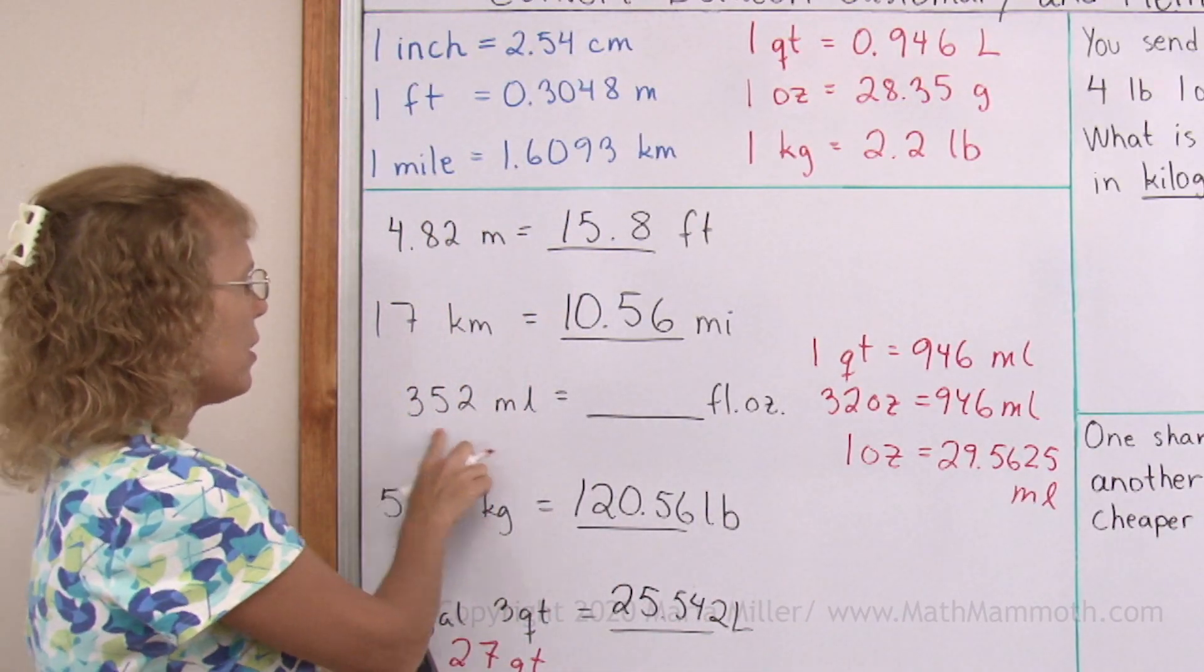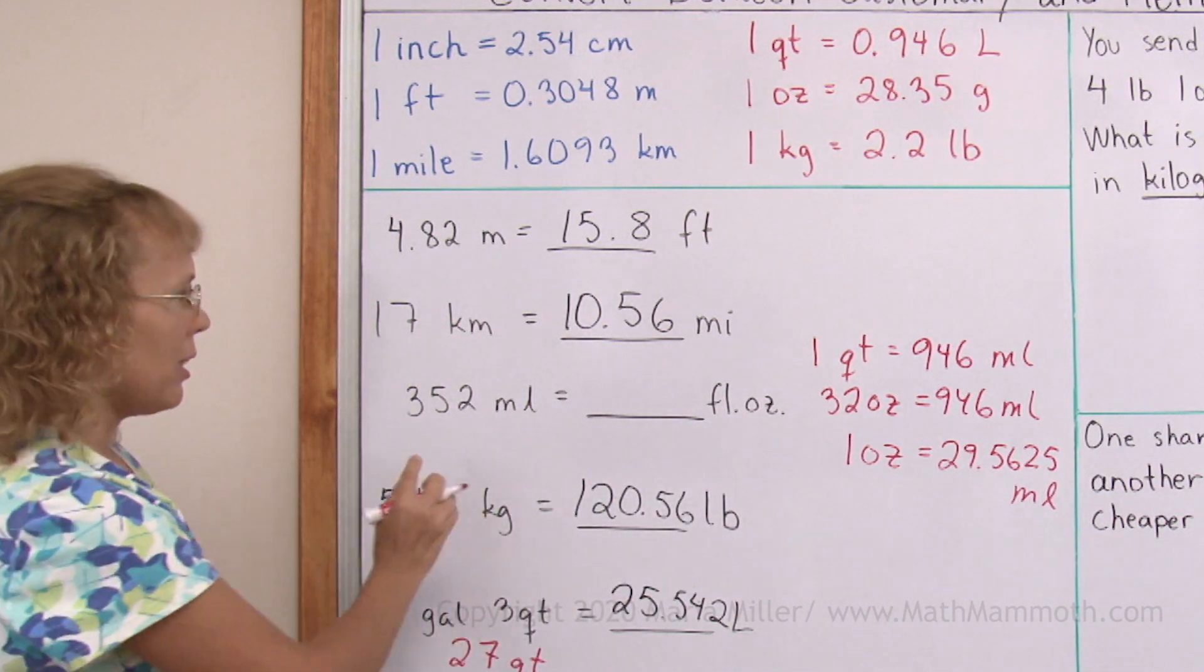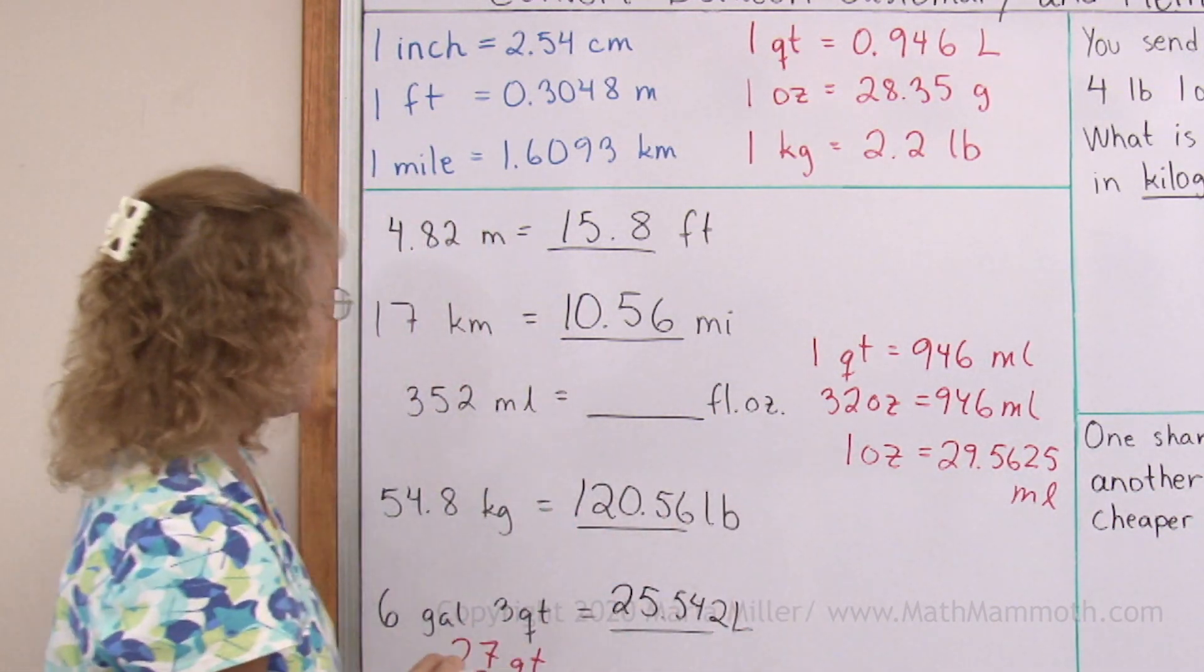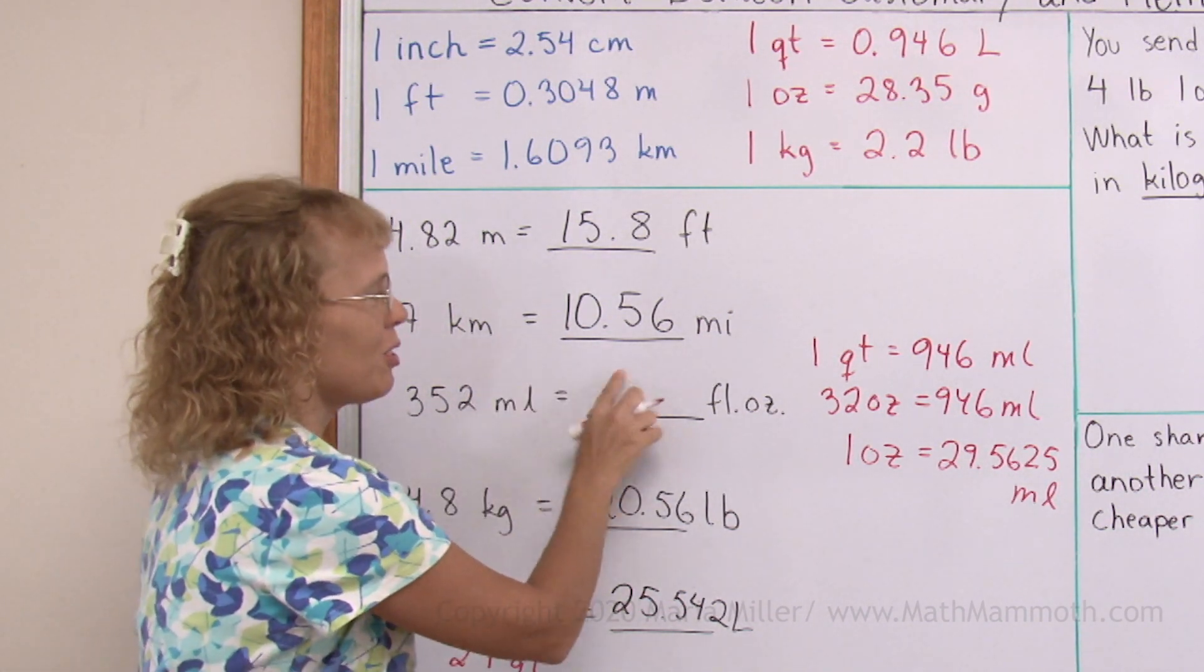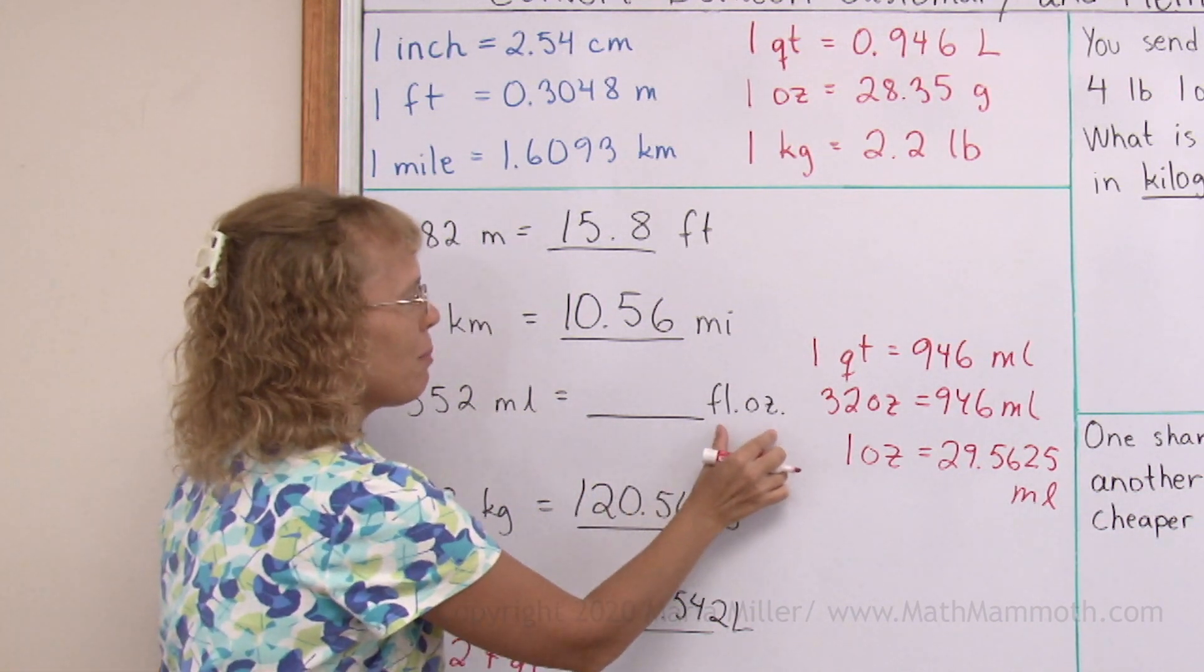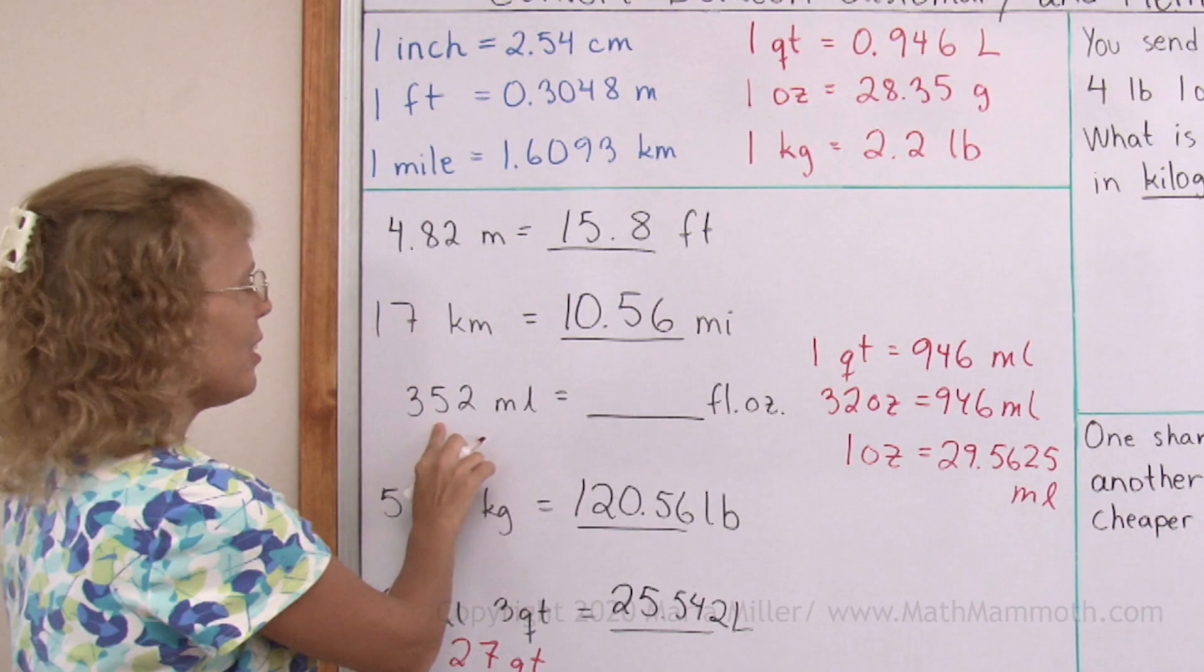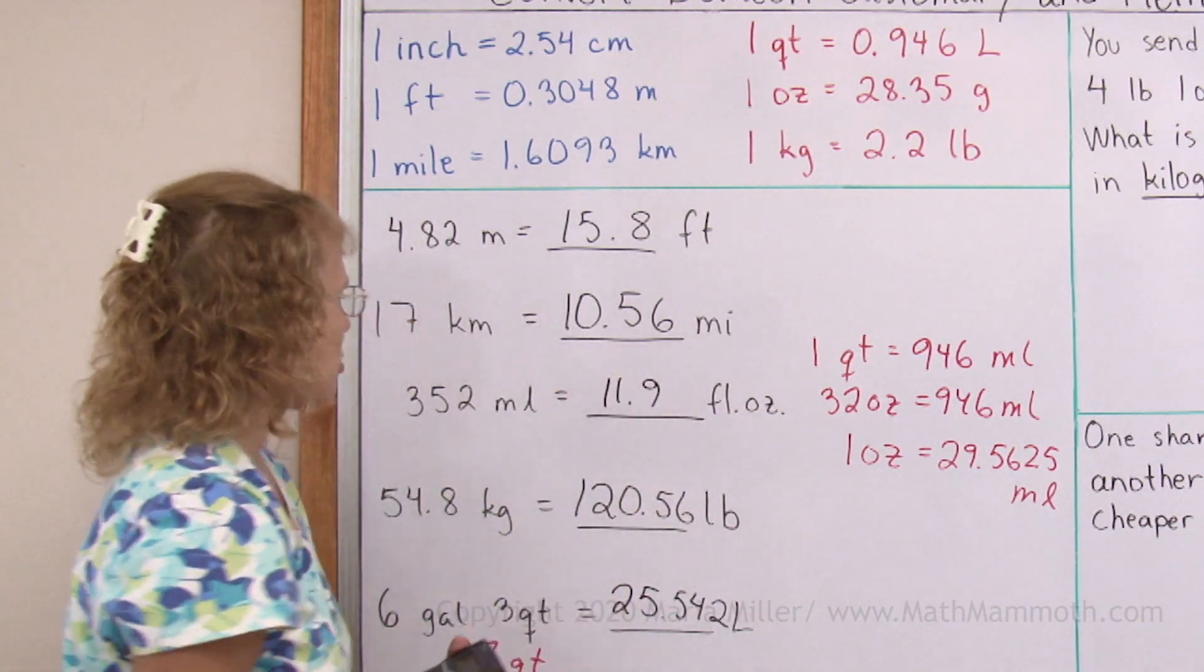Okay, now milliliters into fluid ounces. Do we need to divide or multiply? If I multiply, I would get many thousands of fluid ounces. I hope you can see that won't work. Fluid ounces are bigger units than these. So, I need to divide. Okay, this is about 11.9 fluid ounces.